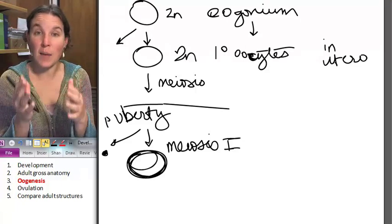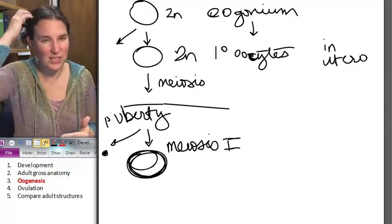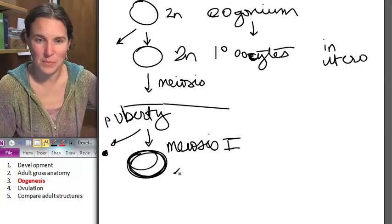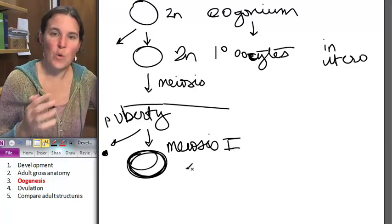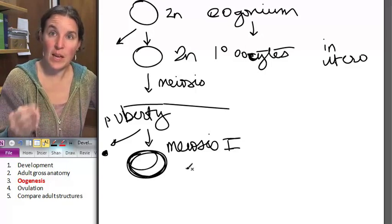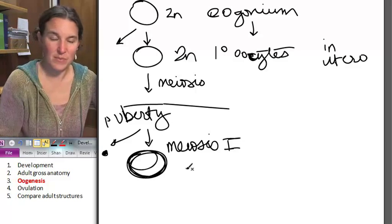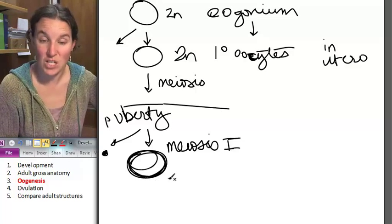And again, these are haploid cells. The process is exactly the same. It's just that our timing is really bizarre. So one of them will finish going through meiosis I every month. Five of them will go through the process of meiosis I and finish it.